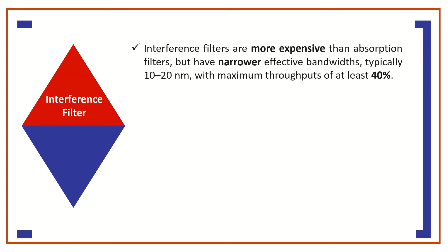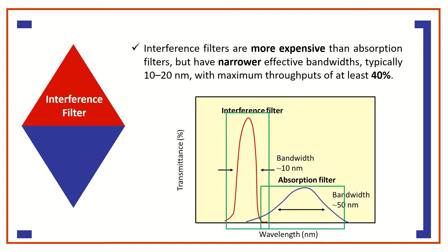Interference filters are more expensive than absorption filters but have a narrower effective bandwidth, typically 10 to 20 nanometers, with maximum throughput of at least 40%.